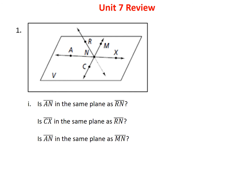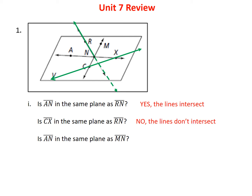Problem 1I asks: is segment AN in the same plane as RN? Notice AN and RN form a little triangle, so yes — the lines intersect and form a plane. Is CX in the same plane as RN? CX goes one way and RN goes another, and they miss each other — they are skew lines, so they are not in the same plane. Is AN in the same plane as MN? Those two lines intersect, so they are also in the same plane.